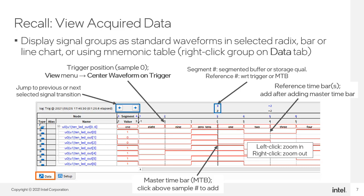By default, the horizontal scale of the display indicates buffer sample numbers, one for every rising edge of the sampling clock. You can right-click the scale and select Time Units to display actual time delays between captured samples. When viewing sample numbers, the sample captured at the trigger is considered sample zero, and pre-trigger data samples — captured in the buffer before the trigger occurred — have positive numbers and are displayed to the right of the trigger. Post-trigger samples have negative sample numbers and are to the left of the trigger. If viewing of data discontinuities for storage qualification is enabled, extra markers are displayed to indicate where samples were skipped from being stored in the buffer.